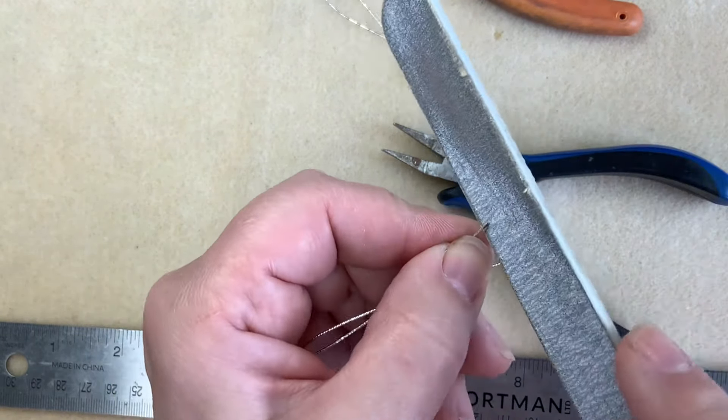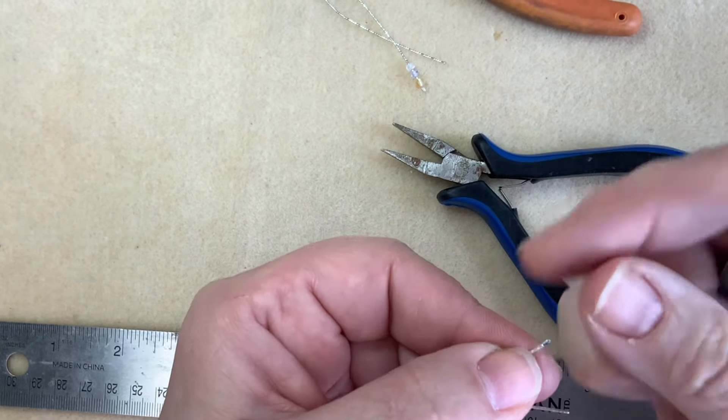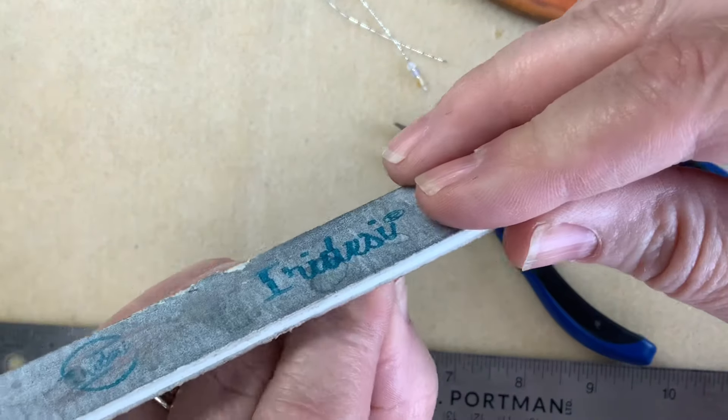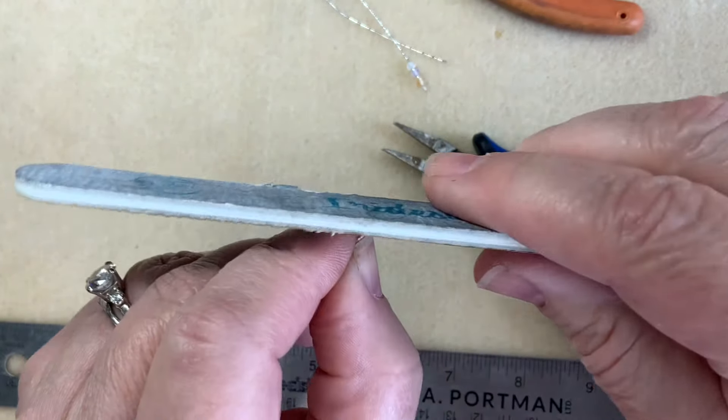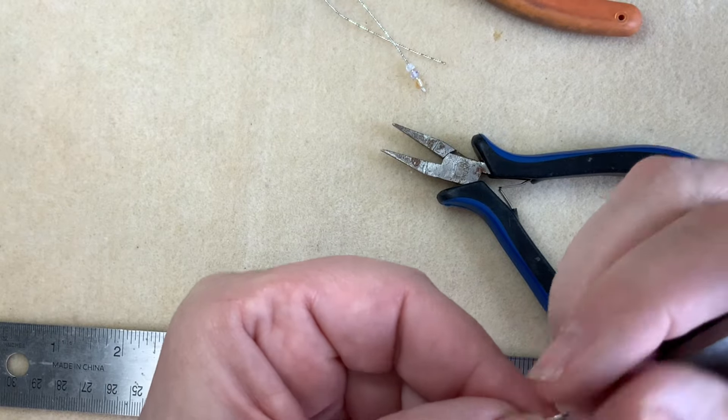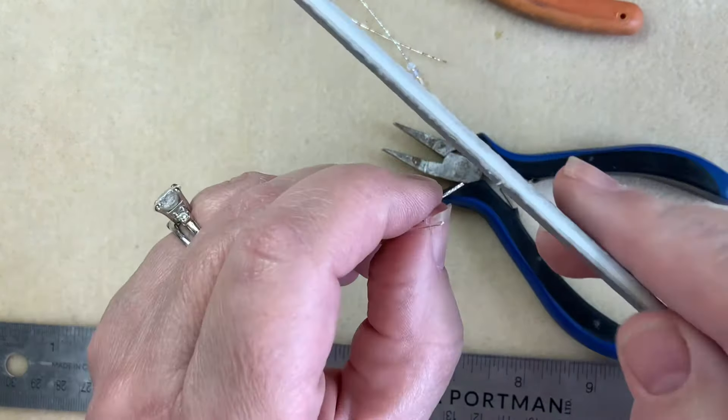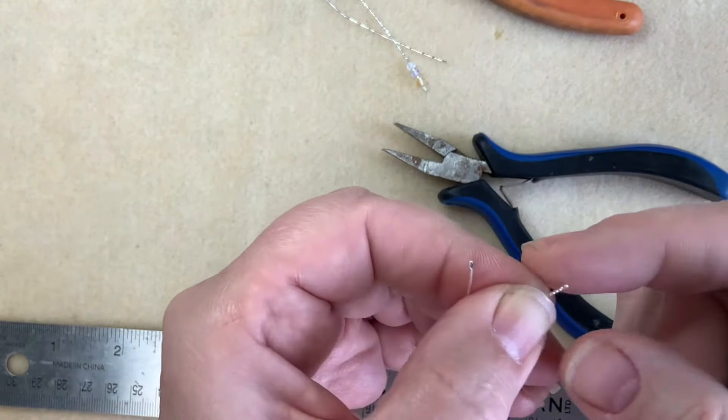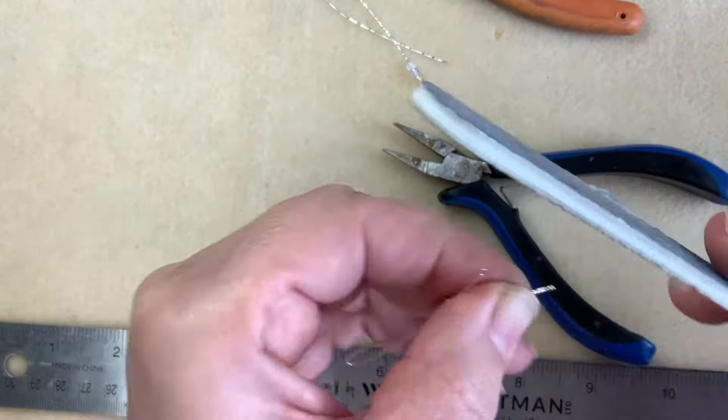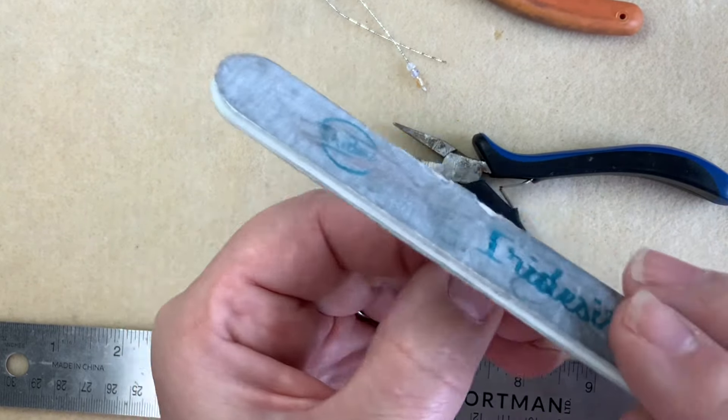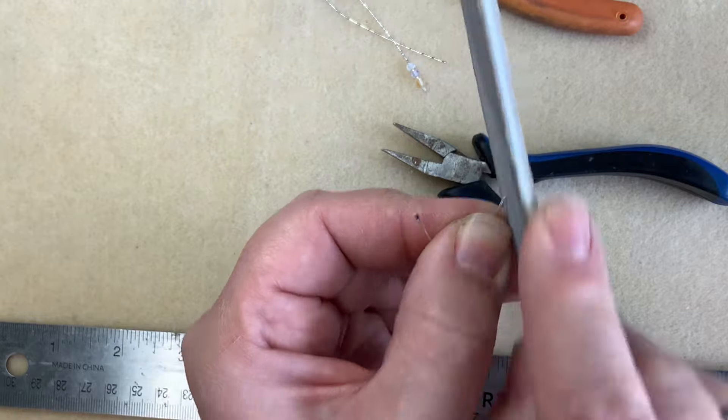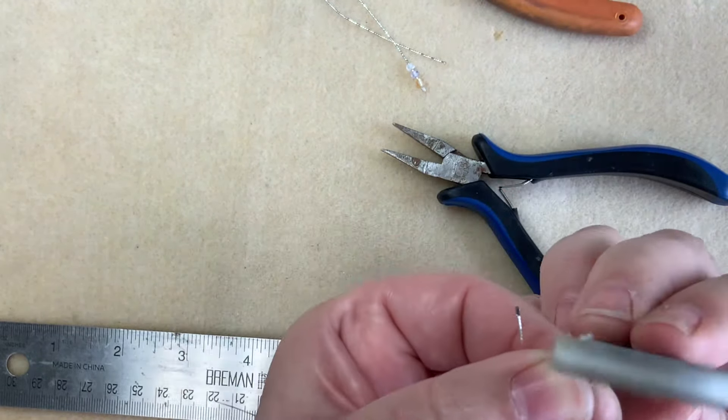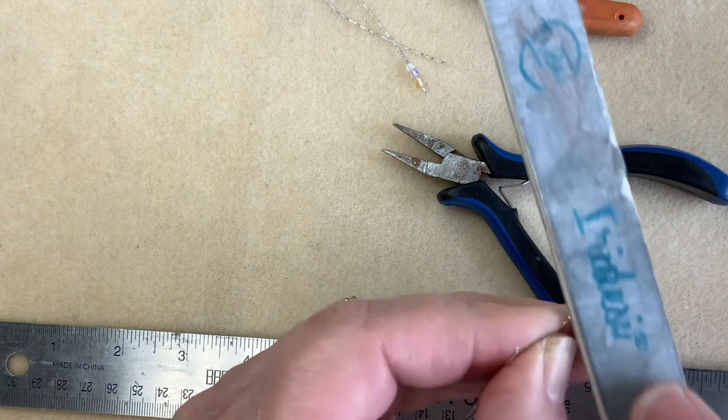So I'm sanding up at an angle over the edge to make sure there's nothing that's going to catch. I'm going to do the same thing on the other end. So the part that goes through my ear doesn't have any sharp edges. Don't file like this. That's just going to keep it flat and sharp. Make sure you're coming at an angle and going over the end all the way around to round this.